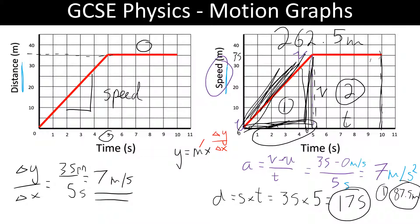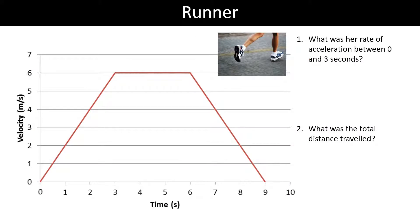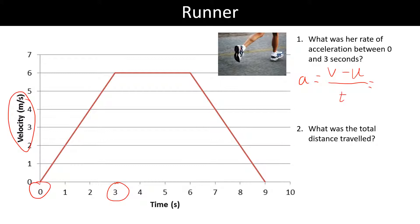Let's have a look at a couple of example questions. We've got a runner where the velocity is increasing, staying the same, and then decreasing. The first thing to check is what kind of graph you're looking at. The question asks: what was the rate of acceleration between 0 and 3 seconds? Acceleration is the final velocity take away the initial velocity — so 6 take away 0 divided by 3, giving us an acceleration of 2 metres per second squared. All we've really done there is work out the gradient of section A.